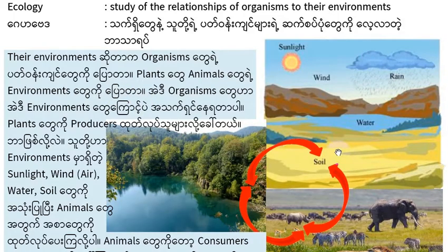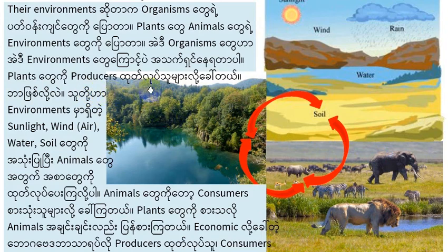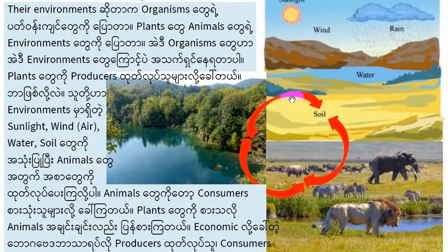The plants and the animals are in the environments and the organisms are in the environments. This plant produces a lot of carbon dioxide, but in the environment there is sunlight, wind, air and carbon dioxide.